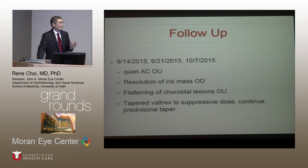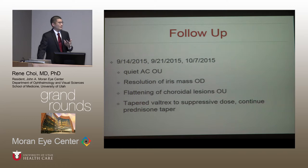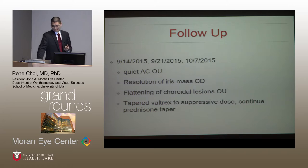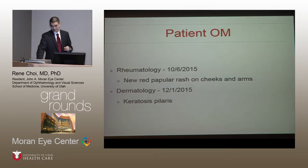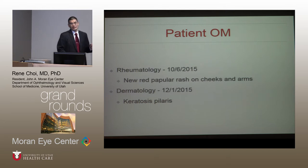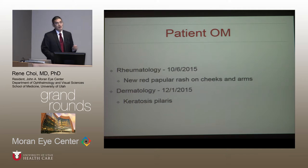At his subsequent visits, he had a quiet anterior chamber. The iris mass completely resolved with treatment, and there was flattening of the choroidal lesions in both eyes. It was thought to be less likely due to a viral etiology, so Valtrex was tapered to a suppressive dose and prednisone taper was continued. The lesions appeared flatter and not as elevated as when he initially presented. Of note, pediatric ophthalmology observed a new erythematous papular rash on his face and arms; however, dermatology attributed this to keratosis pilaris, a benign follicular skin condition.